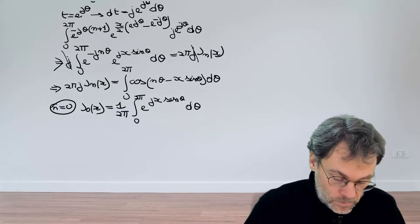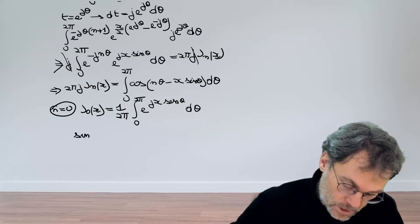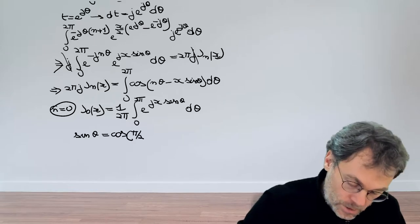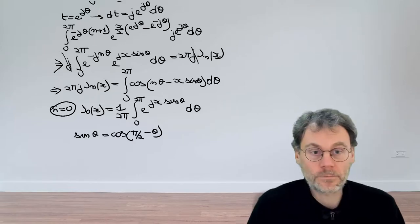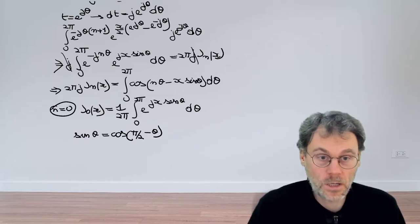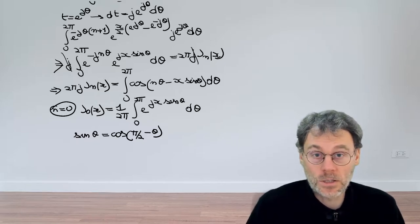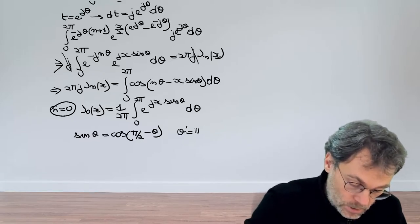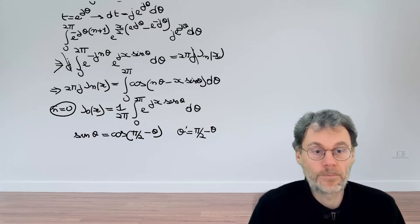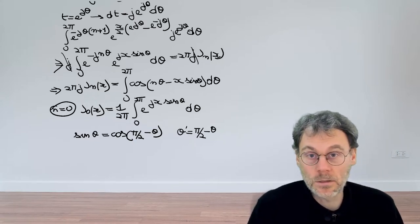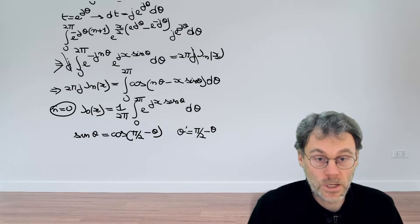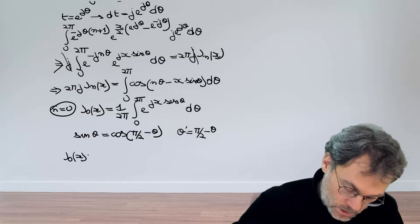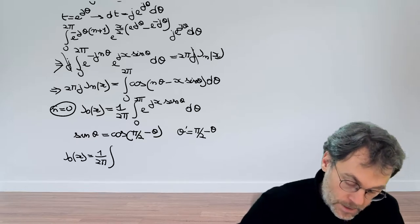Luckily that's pretty easy to fix because we know that if we have the sine of θ that that's actually equal to the cosine of the π/2 complement of θ. So that's the relationship between sines and cosines. So this suggests a change of variables which is θ prime is π/2 minus θ. So that seems like a way to get a cosine in there as opposed to a sine.